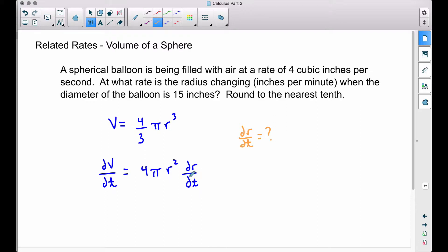In order to find dr/dt, we need to know what the radius is and we need to know what dV/dt is. dV/dt is 4 cubic inches per second.